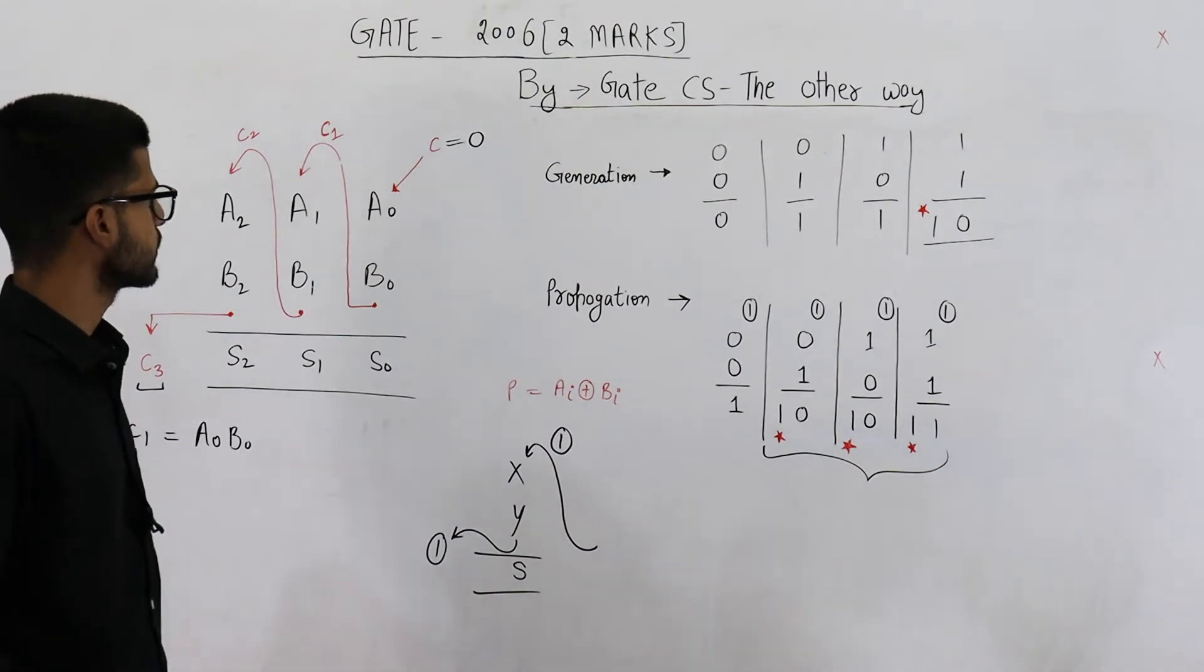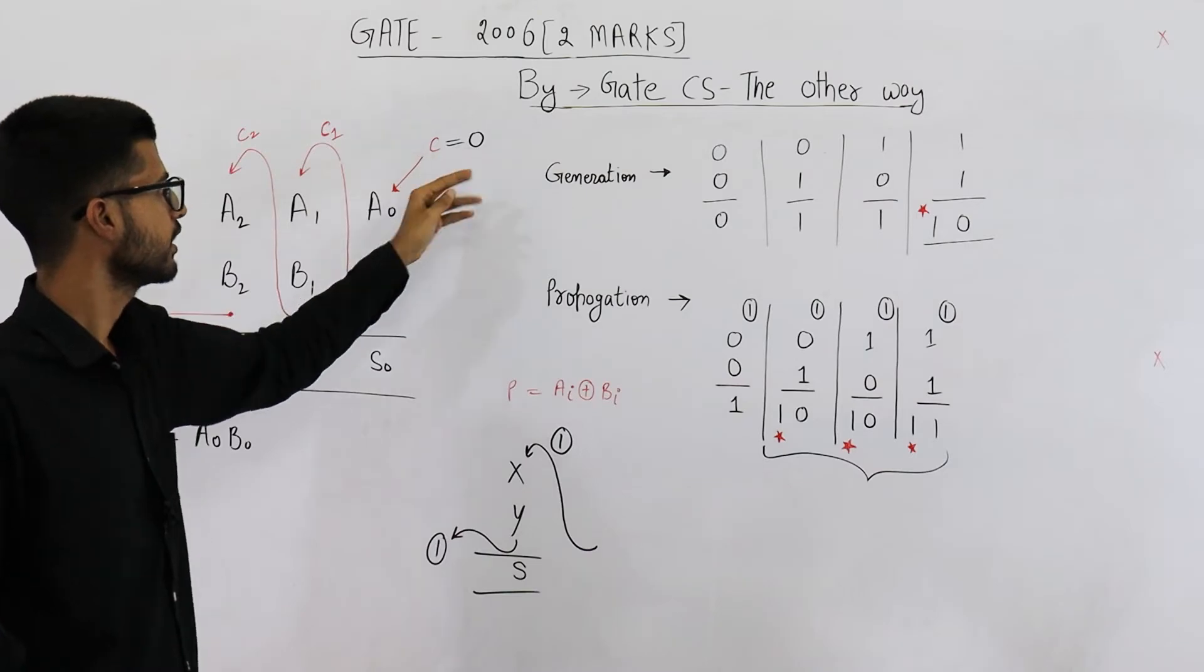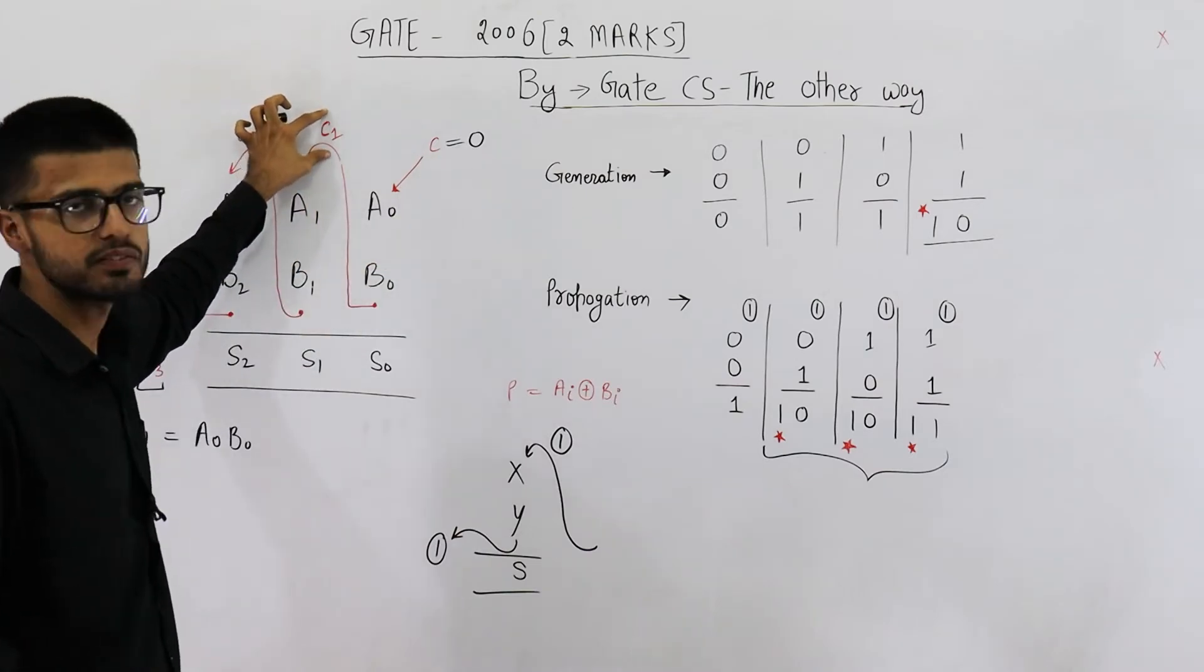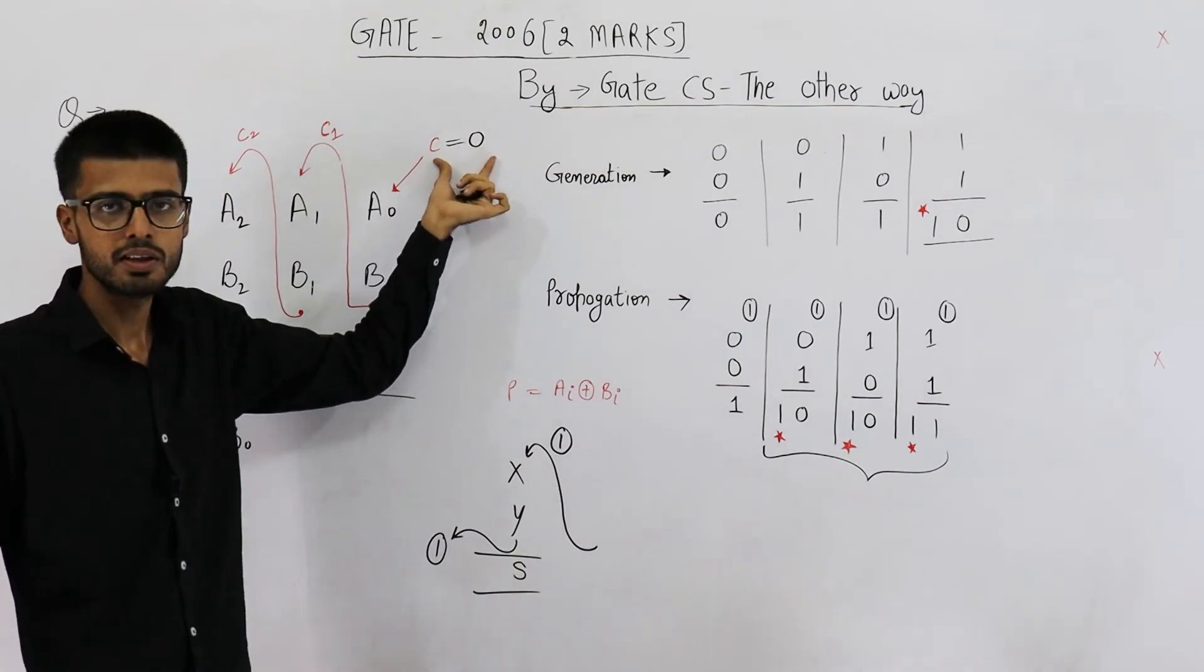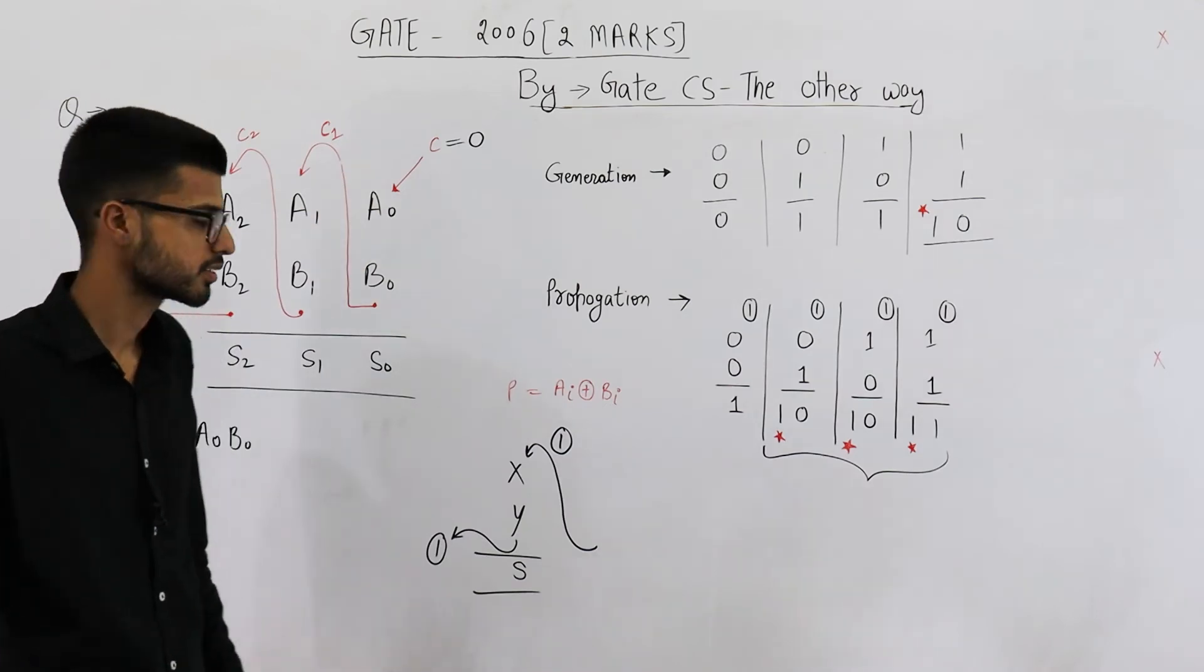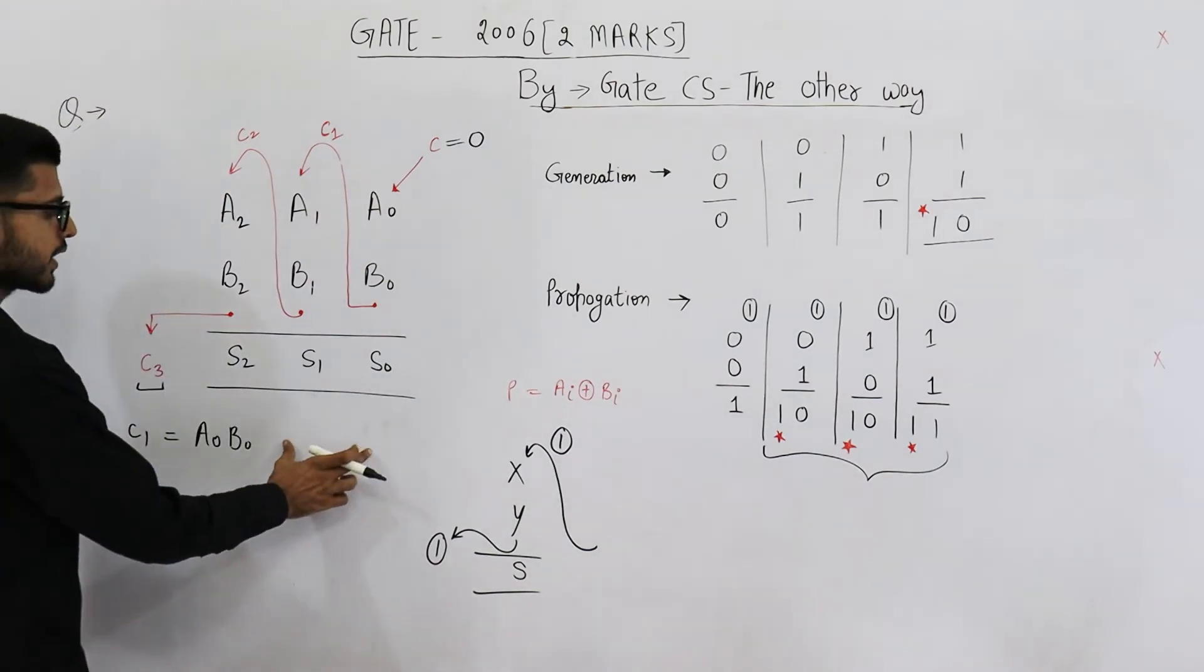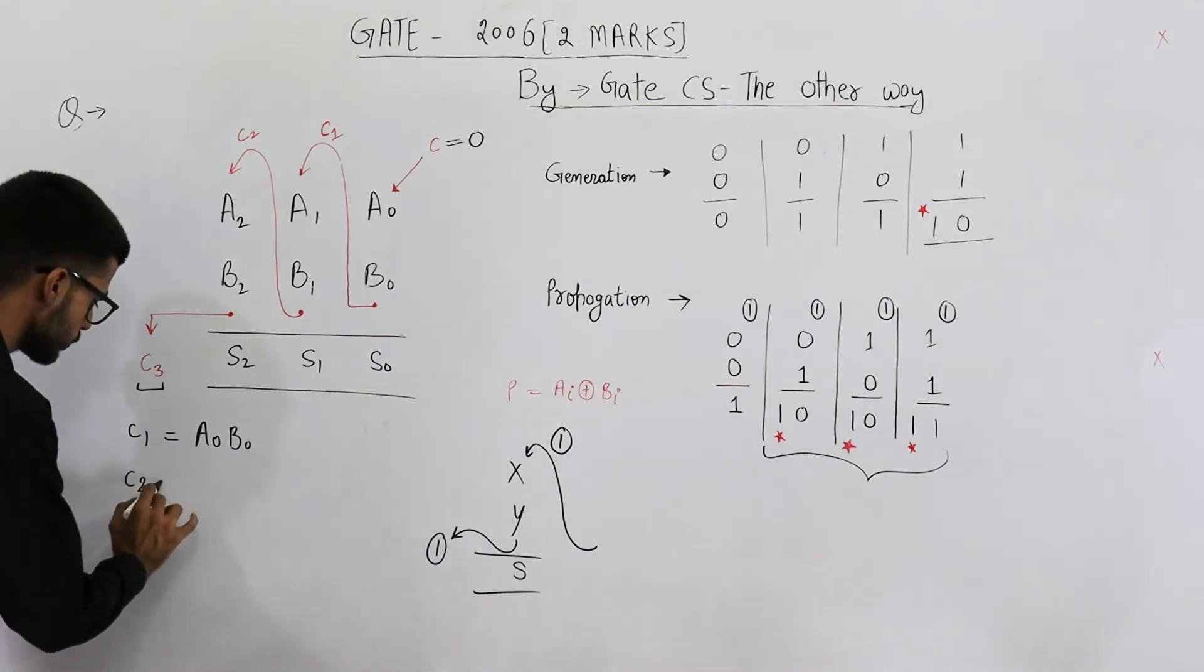Or there is a chance of carry being propagated. If this carry is propagated, still C1 will be 1. But you know this carry is only 0. This C is 0. That means there is no chance of a carry being propagated from previous stage. So you need not write the propagation condition here.